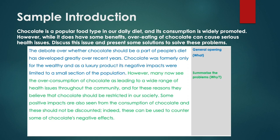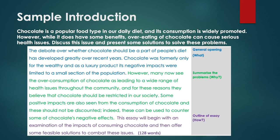Next we have the Why part in green. So now many more people eat chocolate and it has many negative health effects. There is a hint at a possible solution — restricting it — and the writer also mentions some positive impacts that might be part of the solution. The final part is the How, in purple. That's the outline of the essay — it tells the reader how you're going to write the essay. In total it's 128 words. This introduction is fine and is something you can adapt for your own essays.